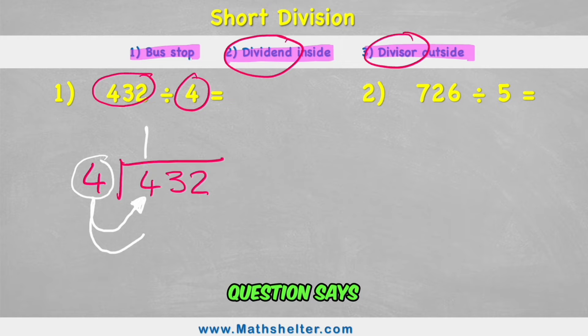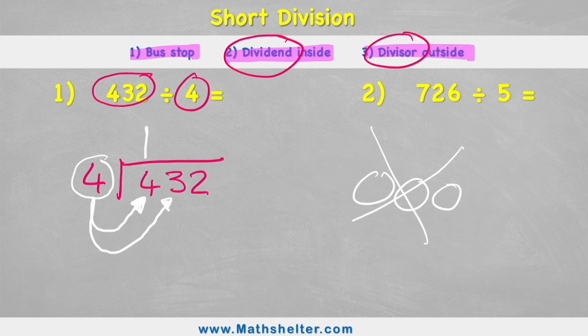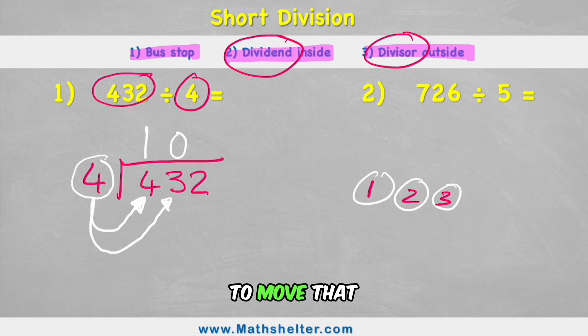Then my next question says, how many fours are there in 3? Well, if I have three circles, I can't get a group of four. So I'll end up with zero groups of four. But I can't just ignore these three because I have three left over. One, two, three. So I would have to move that three to the next column.